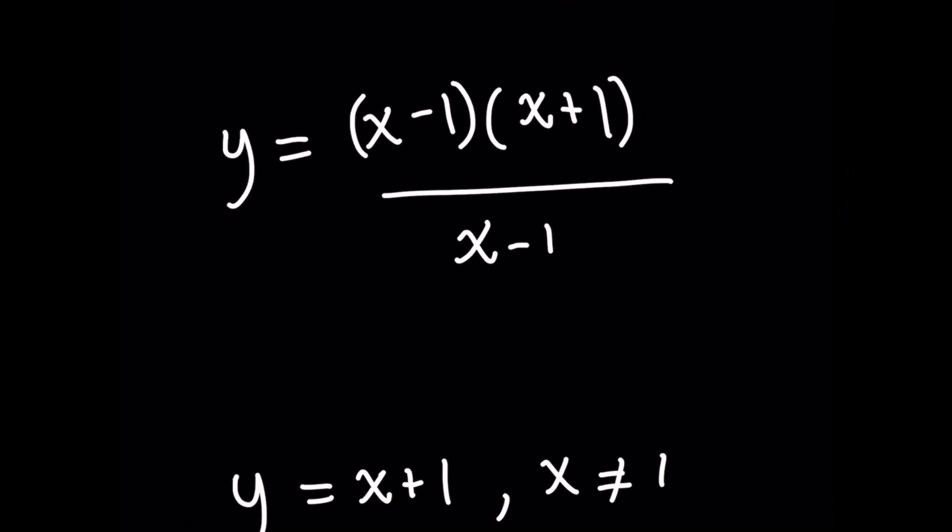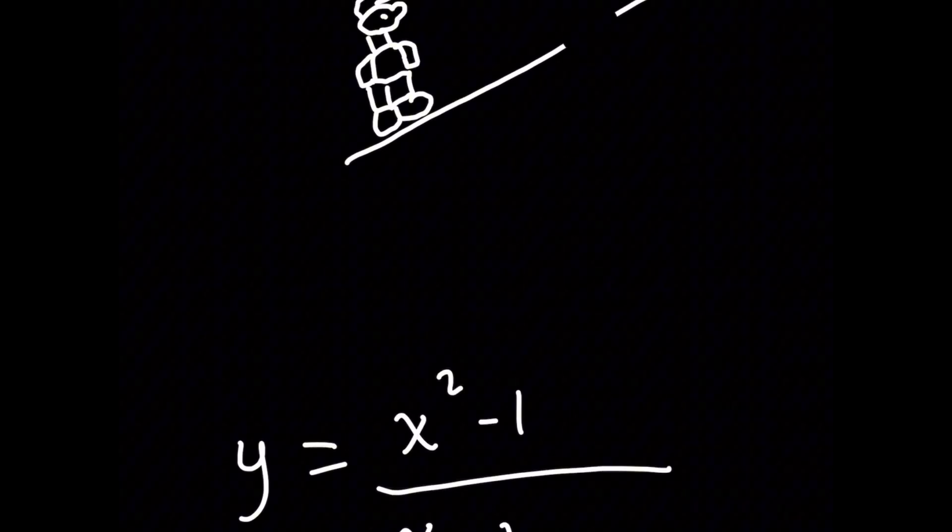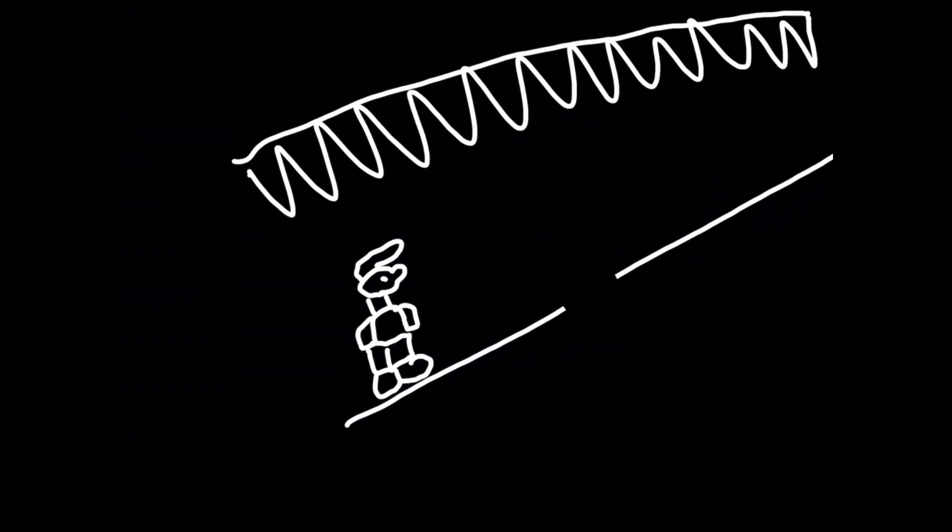Now the problem is that with y equals x plus 1, Mario is a little bit confused because he tells himself, I don't get it. Y equals x plus 1 should be continuous, but I keep falling in the hole. Mamma mia.